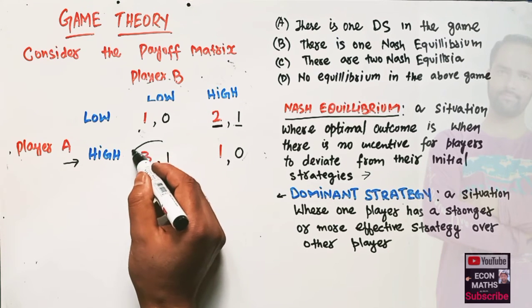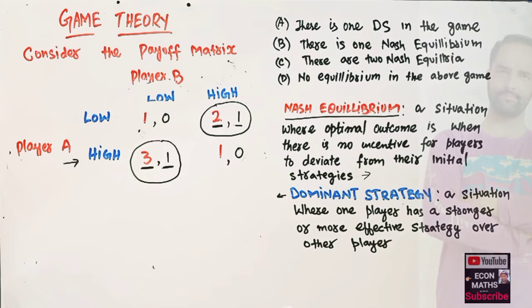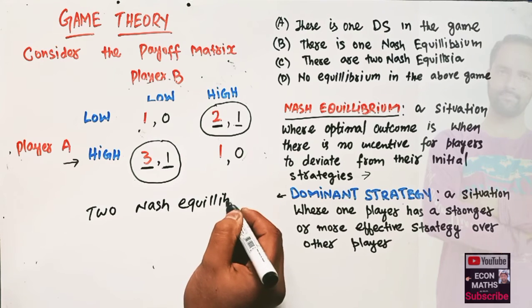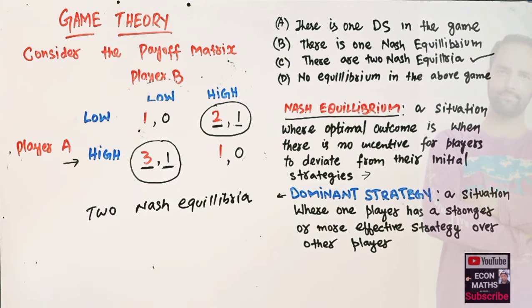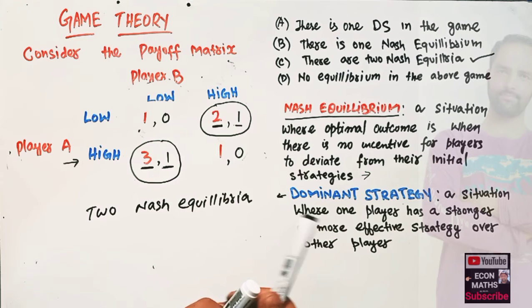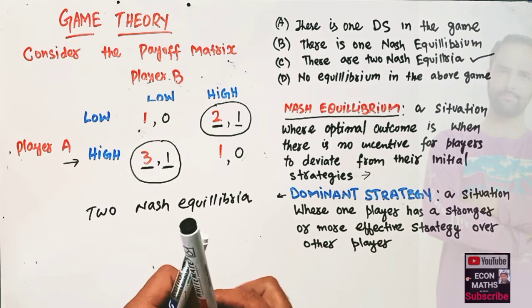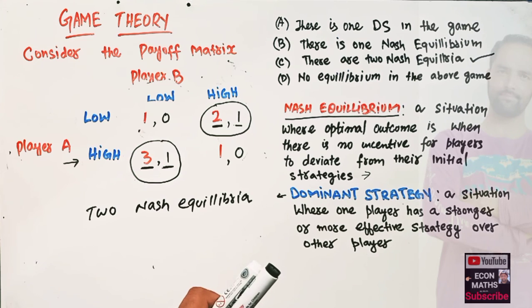We can see that in one cell both three and one are underlined, and in another cell both two and one are underlined. That means this game has two Nash equilibria. So the correct option is that there are two Nash equilibria. To summarize: a dominant strategy has the absolute best effect no matter what the opponent does, and this game has none. The two Nash equilibria are at strategies low-high and high-low.